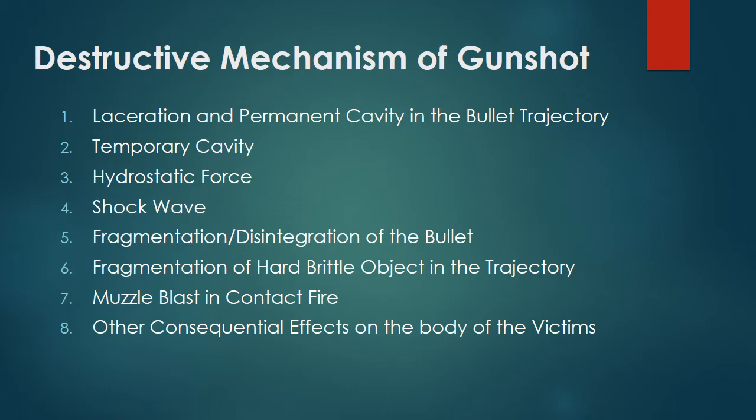Please refer to your book for guidance, as this discussion is just an overview to assist your study. For in-depth learning, read your book, and don't hesitate to ask questions. Destructive mechanism of gunshot: laceration and permanent cavity in the bullet trajectory, temporary cavity, hydrostatic force, shock wave, fragmentation or disintegration of the bullet, fragmentation of brittle objects in the trajectory, and muzzle blast in contact fire.